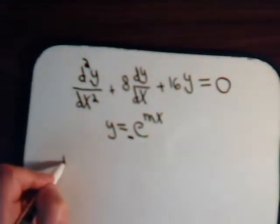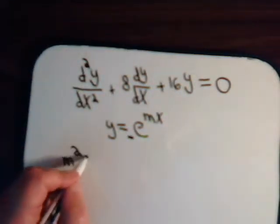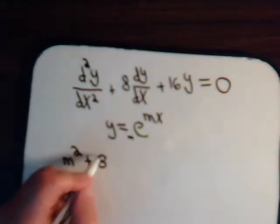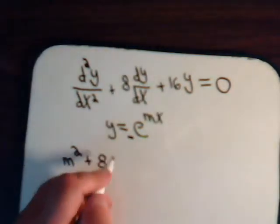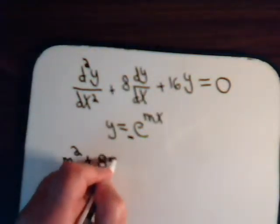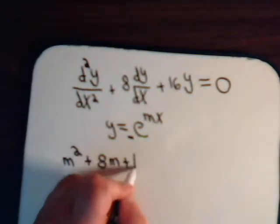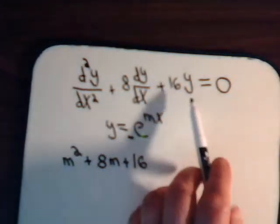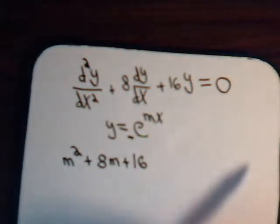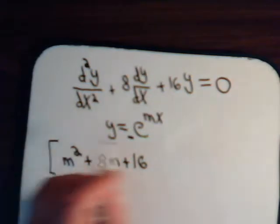This is a second order derivative so we have m squared plus 8. This is a first order derivative so we have m to the first which is just m plus 16. That's a zero order derivative so we have m to the zero which is just one. So here's the auxiliary equation.